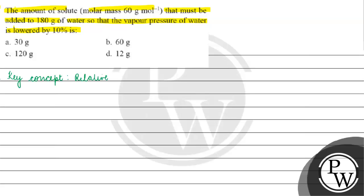The key concept for this question is relative lowering of vapor pressure. The formula is: P0 minus P divided by P0 is equal to the mole fraction of the solute.